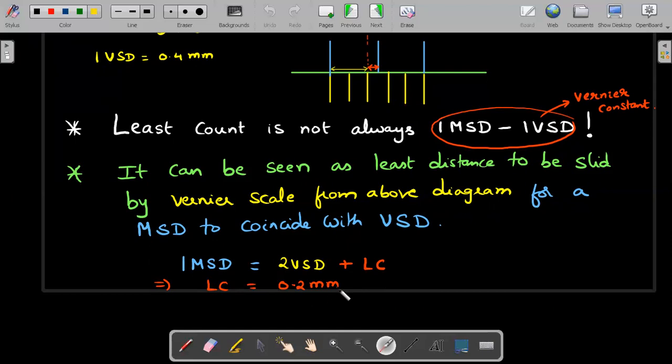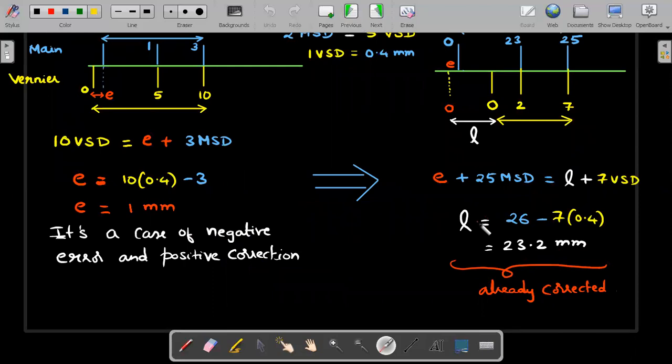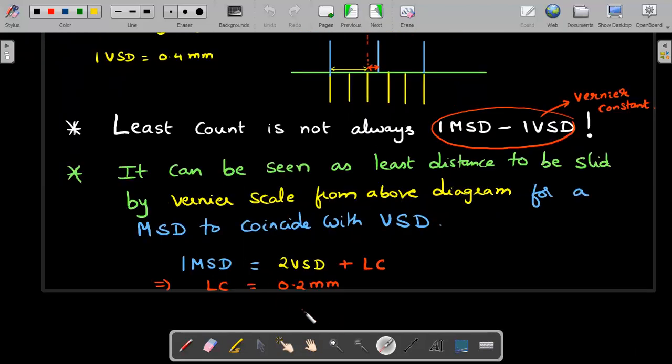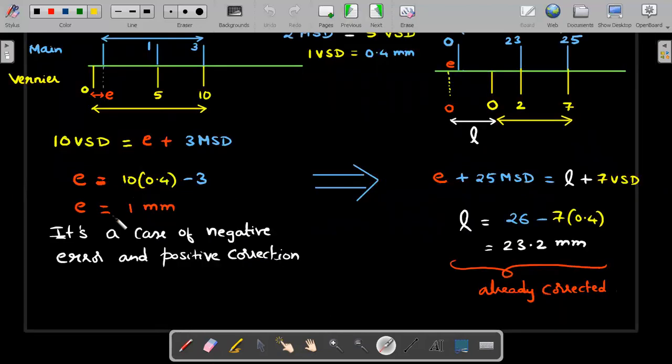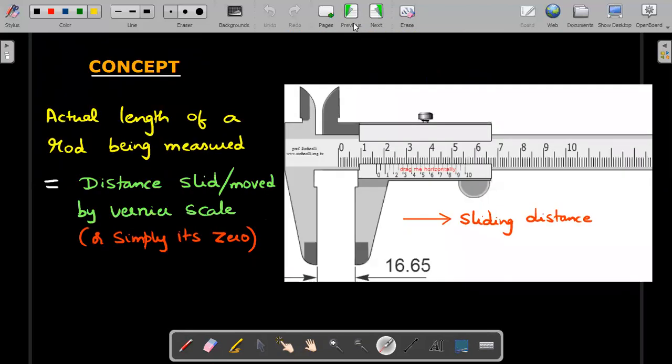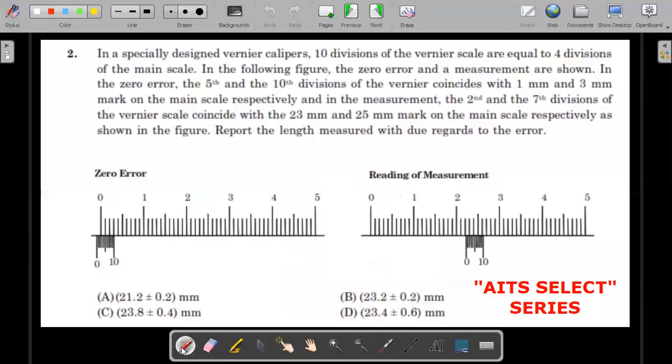Therefore final answer is 23.2 plus or minus the random error counted as least count error in this problem is 0.2. And where is the systematic error? It's already inside this 23.2. Don't write again plus or minus. All these things I hope will give you the confidence to nicely go and mark option B as the correct answer.